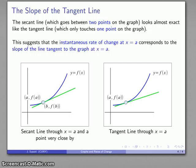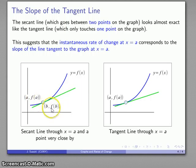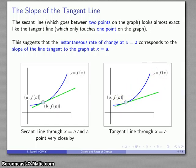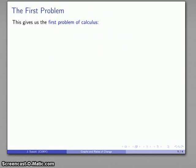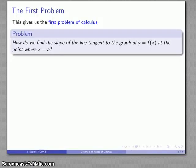So we can take the instantaneous rate of change as the slope of the line tangent to the graph at x equals a. If I want to find the instantaneous rate of change, I can approximate it by finding the slope of the secant line between a point and something so close by that I can't distinguish between the two, or I might take the slope of the line tangent to the graph of y equals f of x at the point where x equals a. This leads us to the first central problem of calculus: how do I find the slope of the line tangent to the graph of y equals f of x at a point where x equals a? This is the problem that will occupy the first half of the semester, and we'll take a look at it in the next few videos.